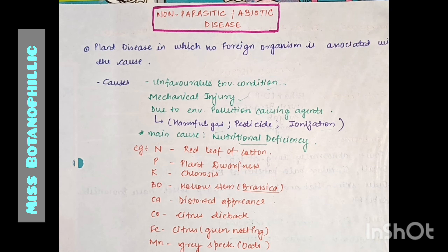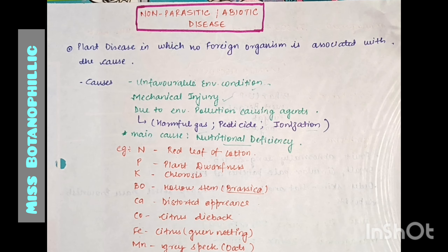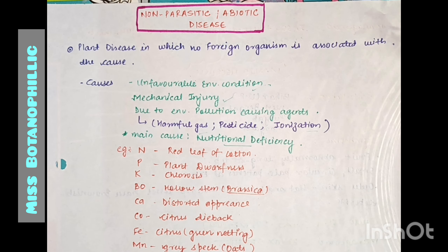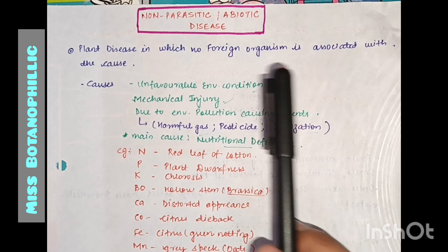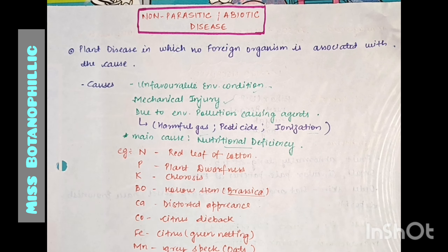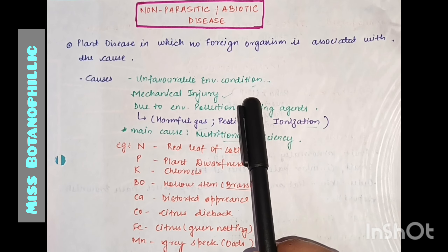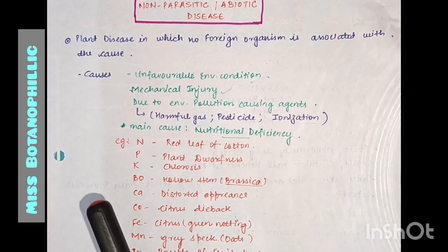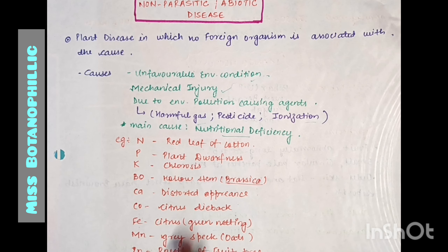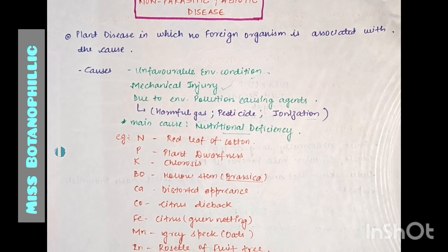Because of non-living things causing plant disease, we call it abiotic disease. Plant disease in which no foreign organism is associated with the cause is called non-parasitic disease. The causes can be unfavorable environmental conditions, mechanical injury, environmental pollution, or the main cause may be nutritional deficiency.